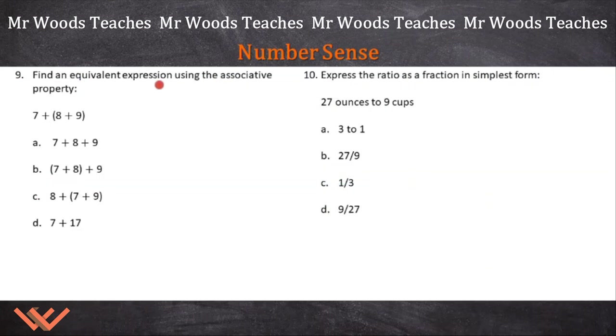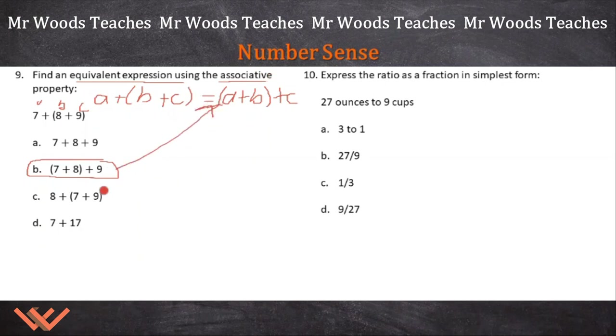Number nine, find an equivalent expression using the associative property. Equivalent expression using the associative property. Now, what is the associative property? It's the associative property of addition. So I'm going to have A plus B plus C. So I have my parentheses around the B plus C is equal to parentheses A plus B plus C. I just have to find that pattern. This is my A, this is B, and this is C. I just have to find the pattern. So A plus B, let's see here. Where's my parentheses here? So seven plus eight plus nine. There we go. This is going to be my equivalent according to the associative property.